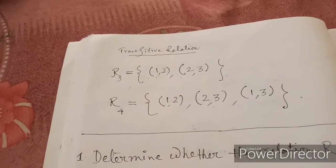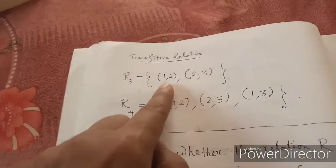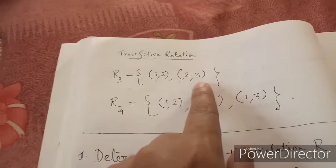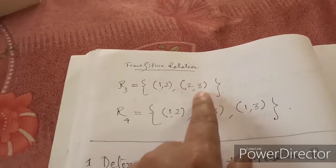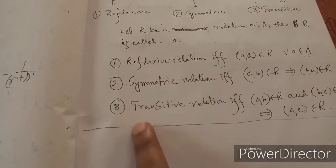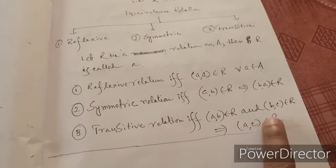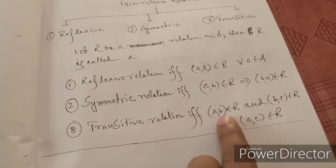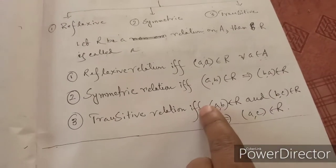Let us consider a transitive relation. Let R3 = {(1,2), (2,3)}. This relation is not transitive because a relation is transitive if and only if: if (a,b) belongs to R and (b,c) belongs to R, then (a,c) must belong to R — where the b values are common.